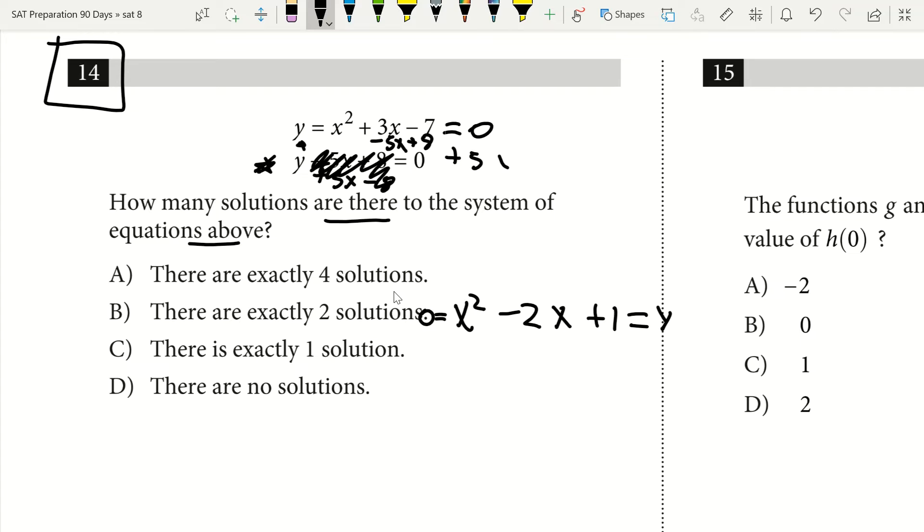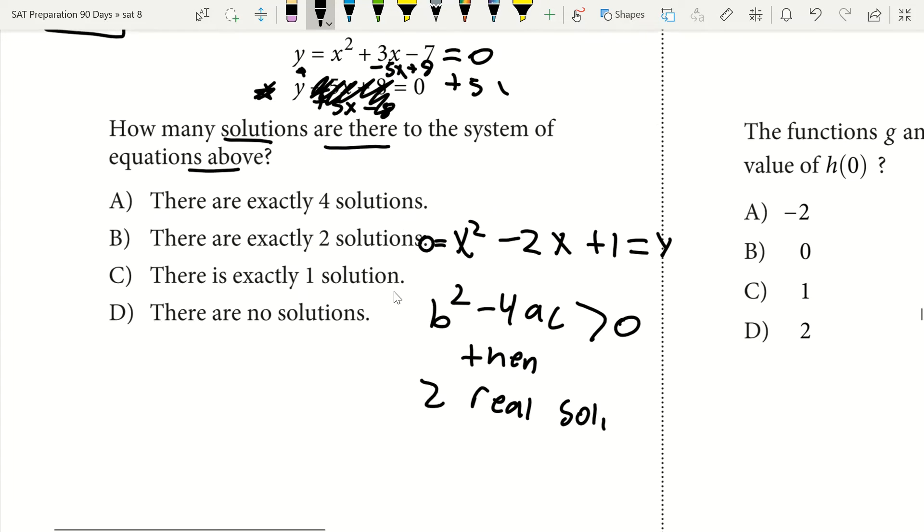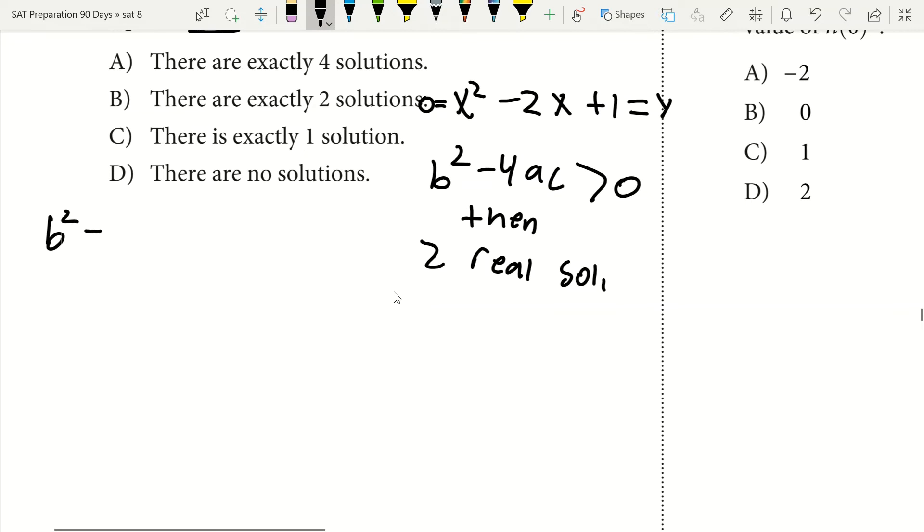So what I can do at this point is use b squared minus 4ac to determine the number of solutions. If b squared minus 4ac is greater than 0, then there are going to be two real solutions. If b squared minus 4ac equals 0, there will be one real solution. Now if b squared minus 4ac is less than 0, then there are no real solutions.